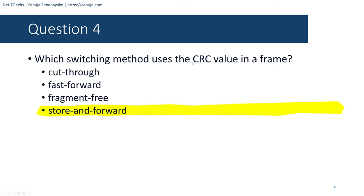Question number forty-three: What are two actions performed by a Cisco switch? Options include: building a routing table based on the first IP address; using the source MAC address of frames to build and maintain a MAC address table; forwarding frames with unknown destination IPs to the default gateway; utilizing the MAC address table to forward frames via the destination MAC address; and examining the destination MAC address to add new entries to the MAC address table. The correct answers are: using the source MAC address to build and maintain a MAC address table, and utilizing the MAC address table to forward frames via the destination MAC address.